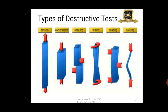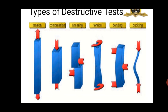The blue colored things shown here are the specimens. When load is applied, the extreme left is known as tension or tensile; the second one is compression load; the third one is shear; the fourth is torsion — that is twisting; the fifth is bending; and the sixth one is buckling.